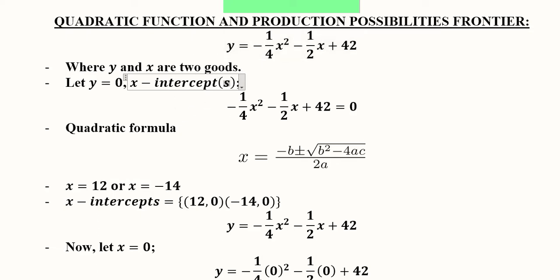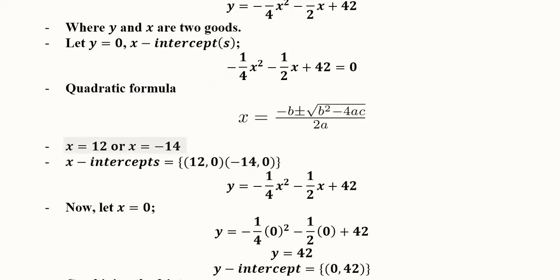For x-intercepts, the value of y will be equal to zero. This is why I have written zero instead of y. Then we have the quadratic formula, which is the usual formula: x = (-b ± √(b² - 4ac)) / 2a. Using this formula, x equals 12 or minus 14. You can pause the video and use this formula to solve, and you will find the two roots of x: 12 and -14.